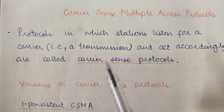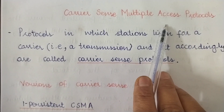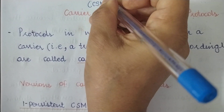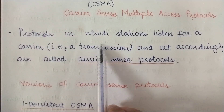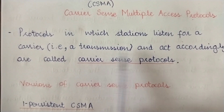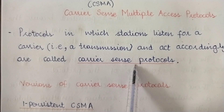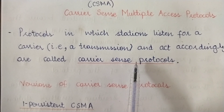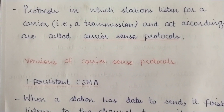Today we are going to study the CSMA protocol, which is also known as Carrier Sense Multiple Access. The protocols in which stations listen for a carrier or the transmission medium and then act accordingly are called carrier sense protocols. Any such protocol in which the station first senses or listens for a carrier — whether it is busy or free — and then transmits accordingly, is known as a carrier sense protocol. There are various versions of these protocols, collectively called CSMA.